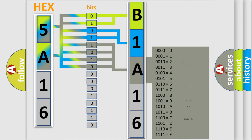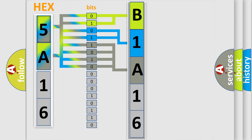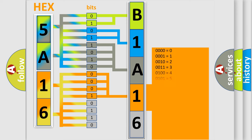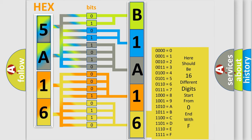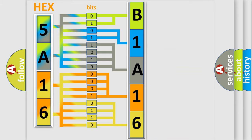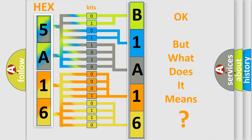The second byte is composed of a combination of eight bits. The first four bits determine the fourth character of the code, and the combination of the last four bits defines the fifth character. A single byte conceals 256 possible combinations. We now know how the diagnostic tool translates the received information into a more comprehensible format.